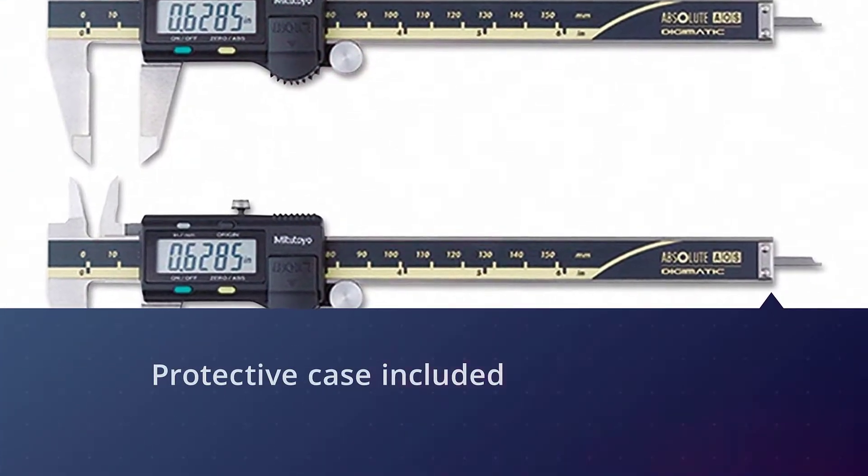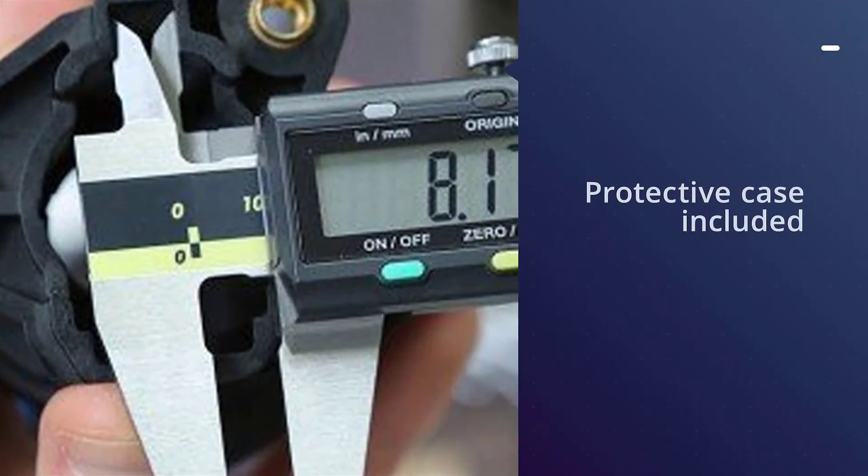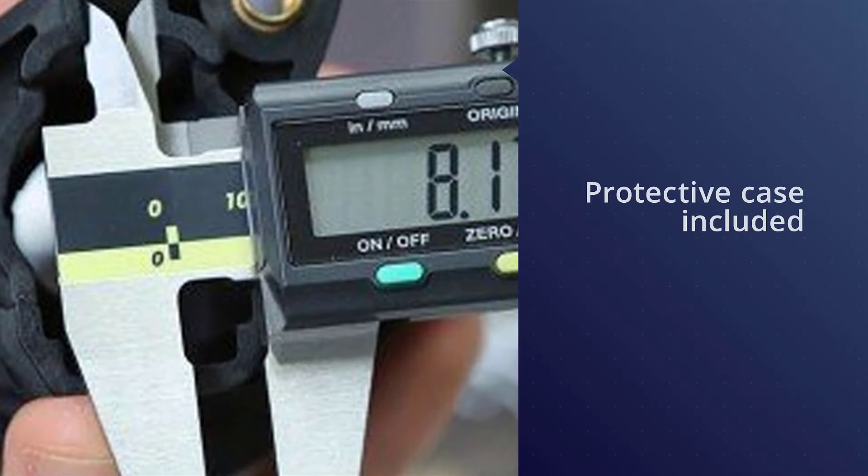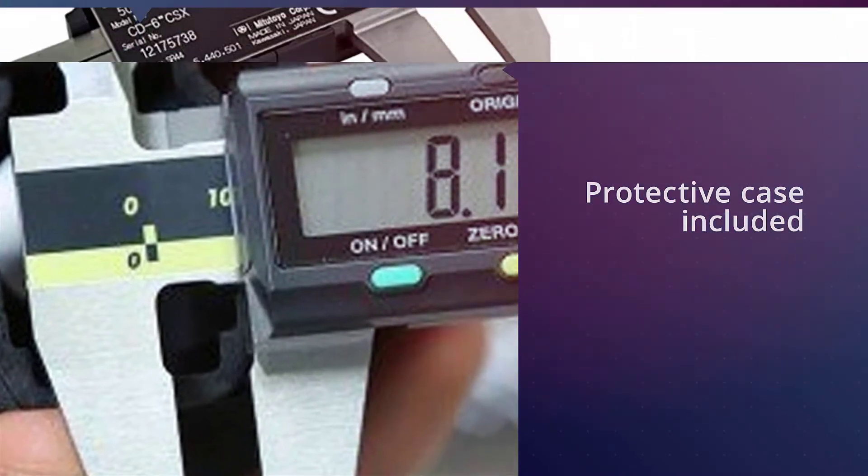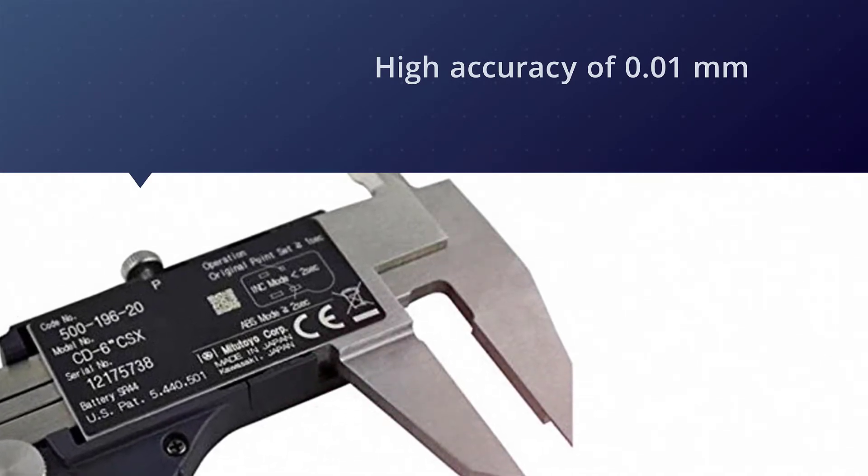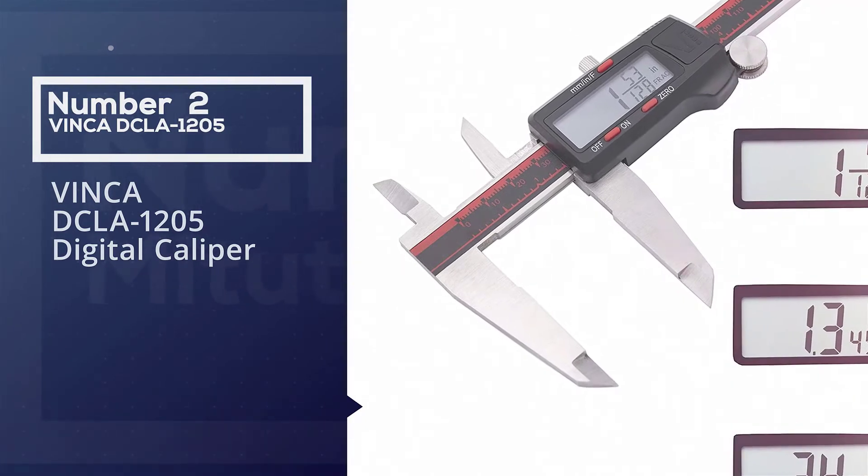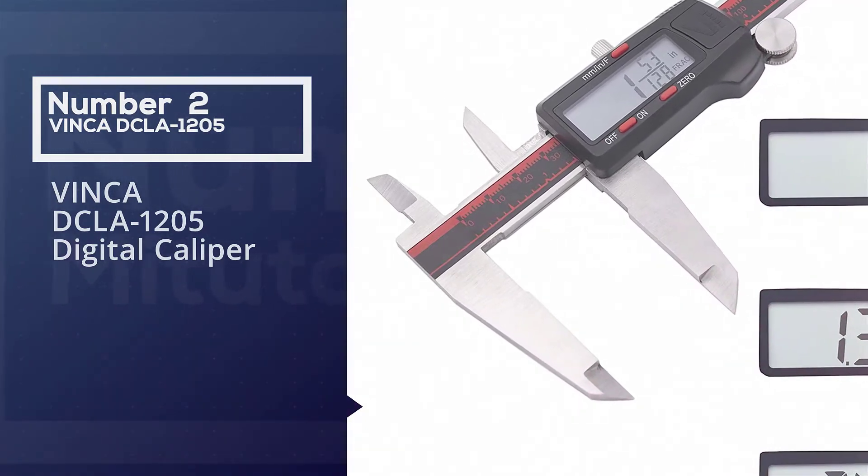The digital screen on the front will display the result in both metric units as well as inches for versatile operation. As you can see in the title, it has an advanced onsite sensor that provides an electromagnetic inductive sensor to avoid dirt, oil, or water affecting the operation.